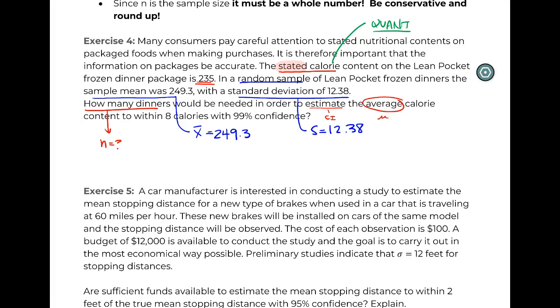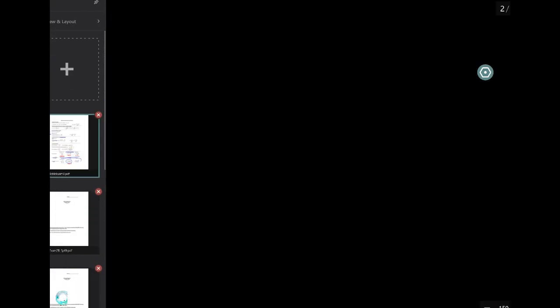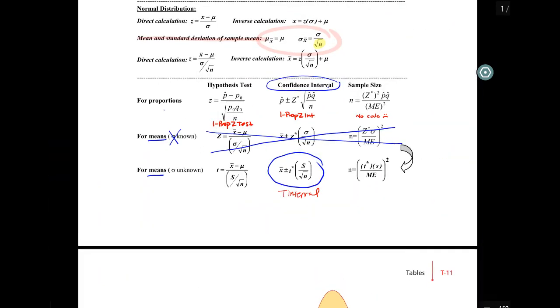If we were unsure where to go, we now know. On the formula sheet we're looking pretty good because we're saying okay, I want to do a sample size calculation, I want to do this for a mean, and I don't know σ.